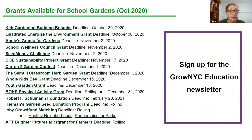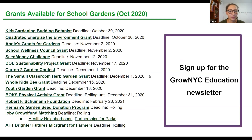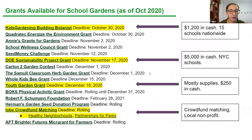I want to point out the grants that are open right now that schools can apply for. This list is taken straight from the monthly newsletter — me and other people from the school gardens team have researched these and found that they're open. We include the deadlines and hyperlinks so you can click on each one in the newsletter and read more information. As you can see, there are quite a lot of them open right now.